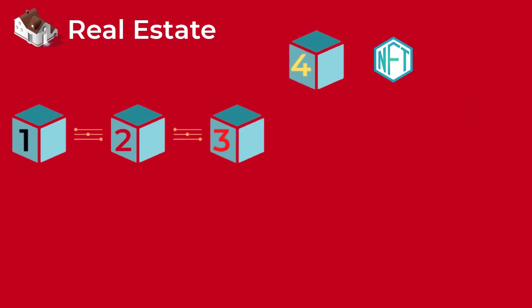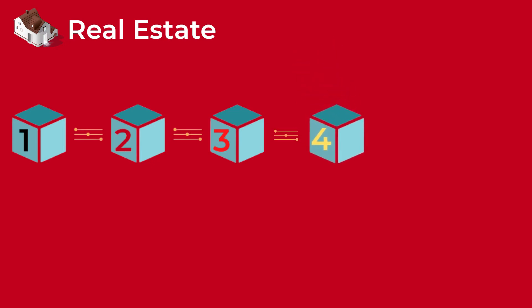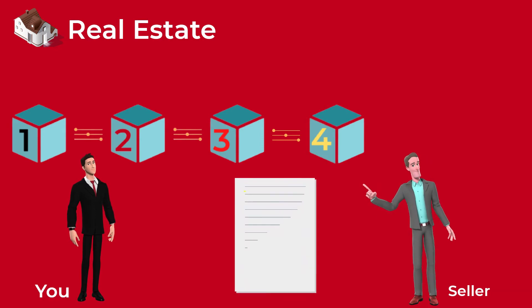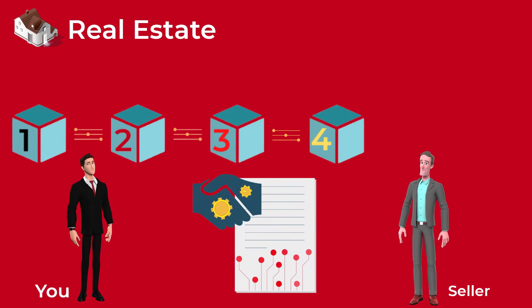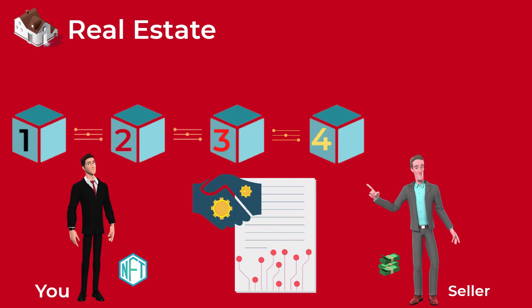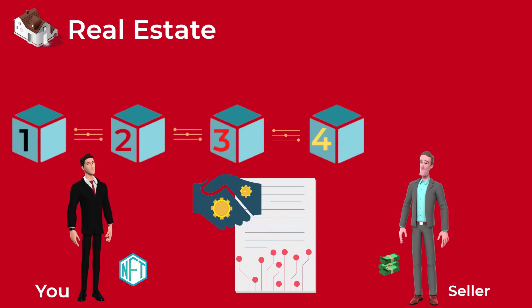Finally, we can use smart contracts in the real estate field, where we can store the ownership of a house as a token on the blockchain, also called an NFT. Whoever has ownership of this NFT on the blockchain has ownership of the house. When you try to buy a house this way, you deposit your money in a smart contract and the seller gets his money only when the NFT ownership transfers to you. You become the only owner of the house, and no one can claim ownership as the blockchain will simply deny it.